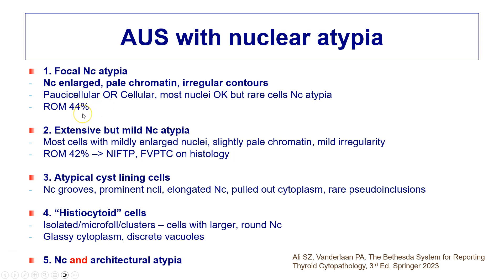The risk of malignancy for focal nuclear atypia is actually fairly high, at about 44%. Then there is extensive but mild nuclear atypia, where most of the cells show a degree of atypia, but only in the form of mild enlargement of the nuclei, slight pallor of the chromatin, and mild irregularity. Quite often these lesions turn out on histology to be NIFTPs or follicular variant PTCs, so again there is a significant risk of malignancy.